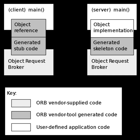Standard mappings exist for Ada, C, C++, C++11, COBOL, Java, Lisp, PL/I, Object Pascal, Python, Ruby, and Smalltalk. Non-standard mappings exist for C#, Erlang, Perl, TCL, and Visual Basic, implemented by object request brokers written for those languages.